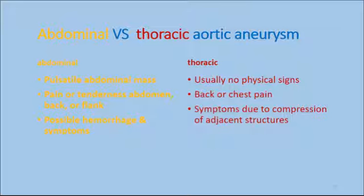You can hear a bruit. Feel the pulsation — but do not palpate. A rupture will present as sudden severe pain in the back or lower abdomen with massive blood loss and hypovolemic shock, which is very imminent. You can have a retroperitoneal hemorrhage with loss of distal pulses and abdominal distension. They have to get into surgery and resect immediately.